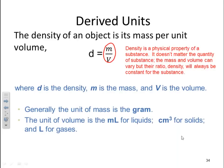Generally, the unit of mass is the gram. And the unit for volume varies depending on the physical state of the substance. For liquids, we tend to use milliliters. For solids, we tend to use centimeters cubed. And for gases, we tend to use liters.